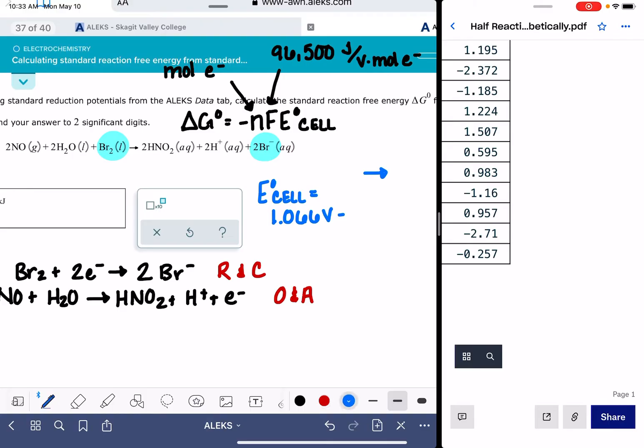Which means that when we calculate E cell, cathode minus anode, this number comes second, 0.983 volts. So now we have enough information to calculate E cell, 1.066 minus 0.983. Our E cell is 0.083 volts. And that is this portion of the delta G.